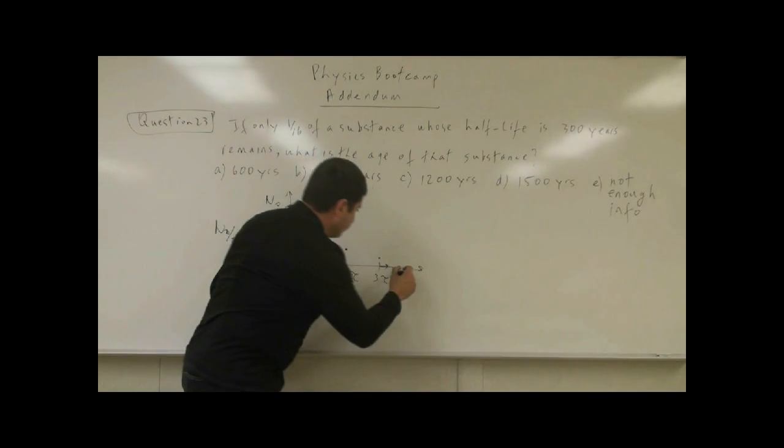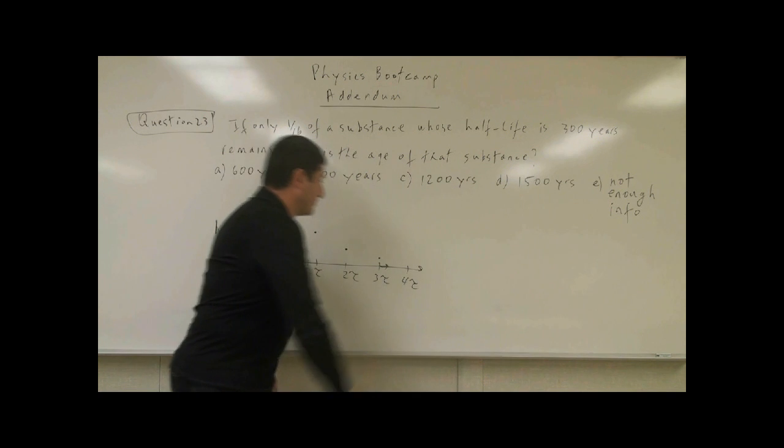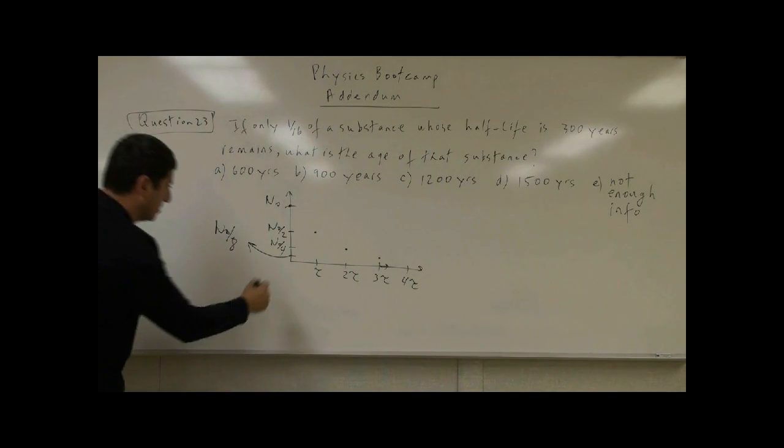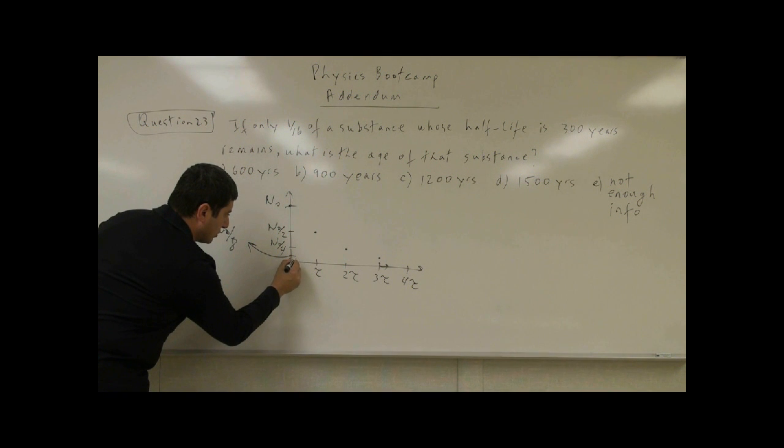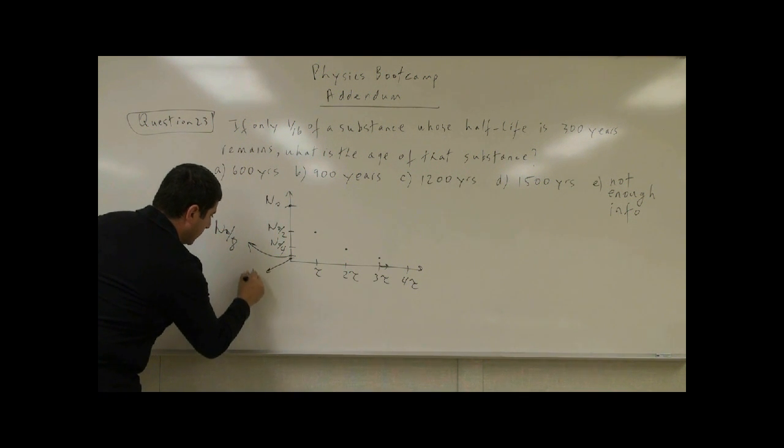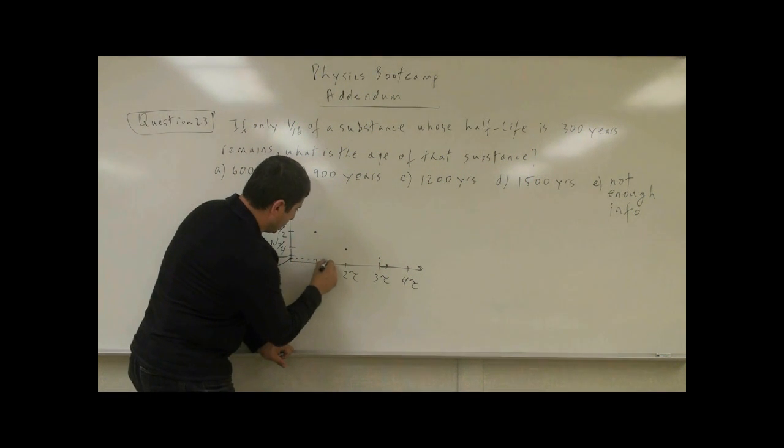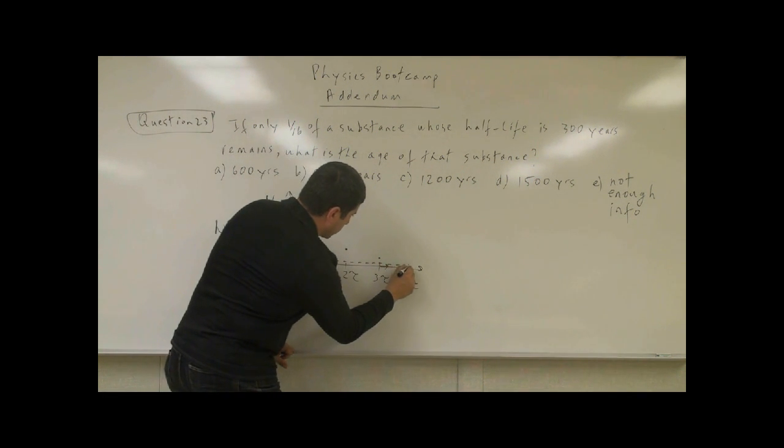After four half-lives, what's going to happen? Half of one-eighth, which is one-sixteenth. So on the graph, that gives you right here, N0 over 16. So that gives you over here.